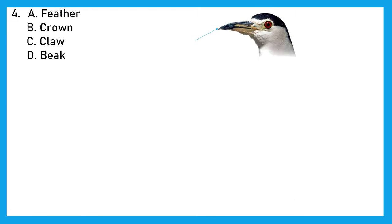Question 4. Can you see the arrow and tell me the part? Is it feather, crown, claw, or beak of a bird? And the right answer is option D, beak.